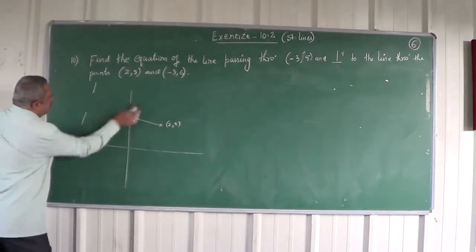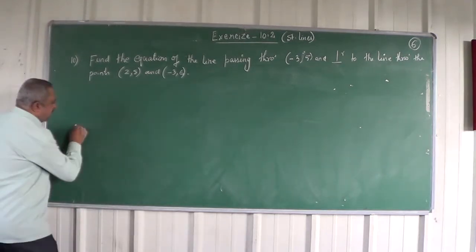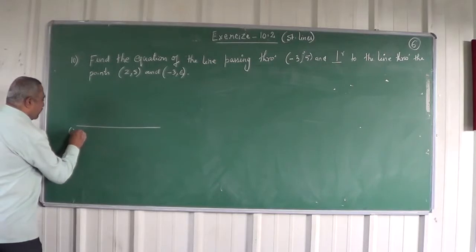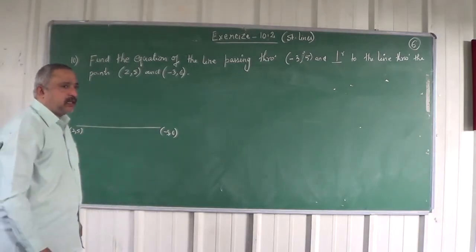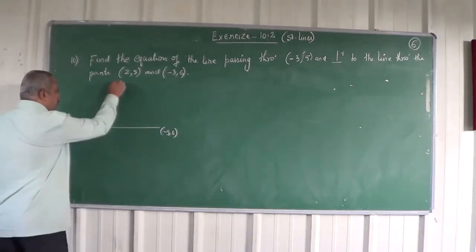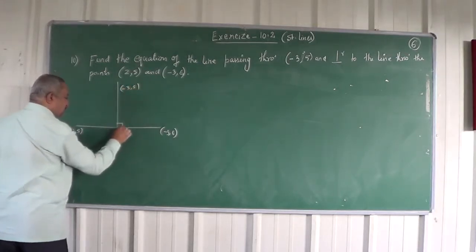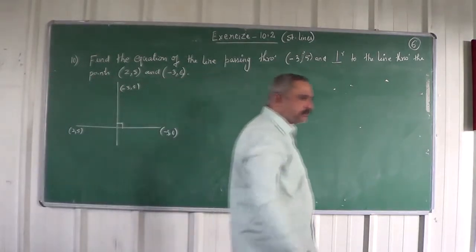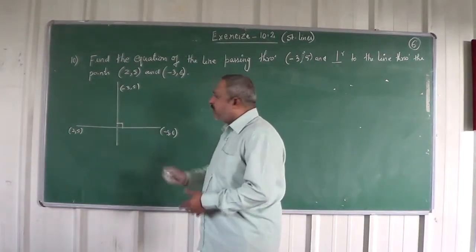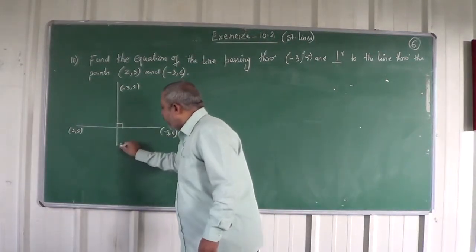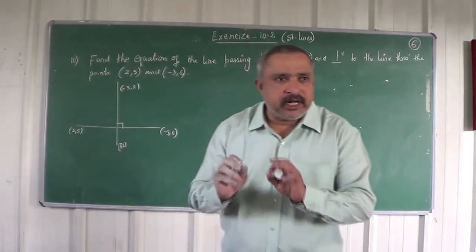So in order to simplify the figure, you can just draw it like this. There is a join of (2, 5) and (-3, 6). Now the required line passes through (-3, 5) and it is perpendicular to that line. This is the required line. Let me abbreviate it as RL — the required line. You want to find the equation of that line.